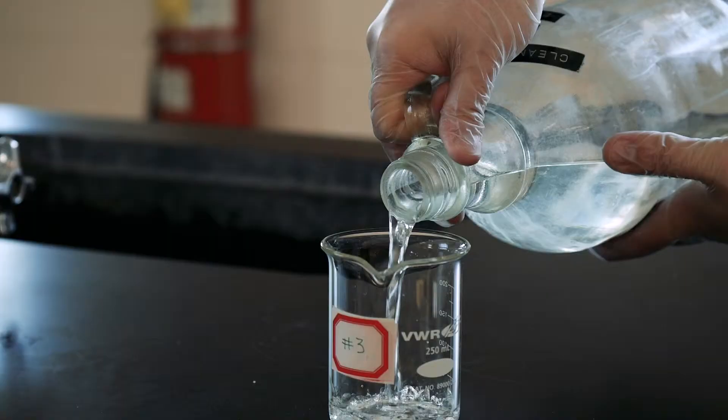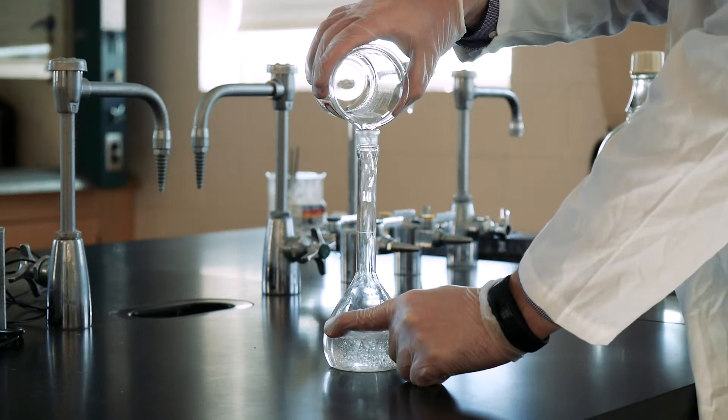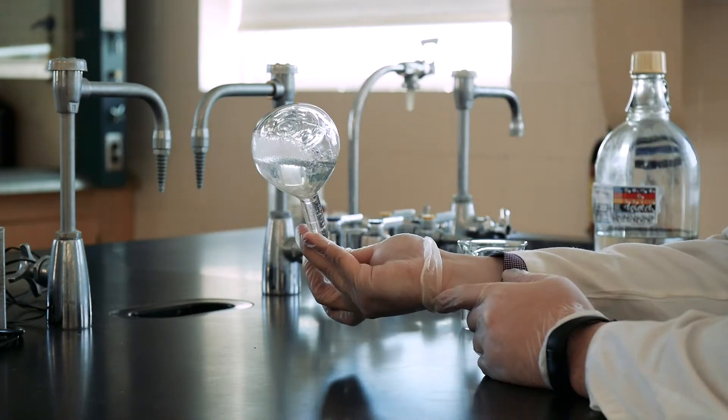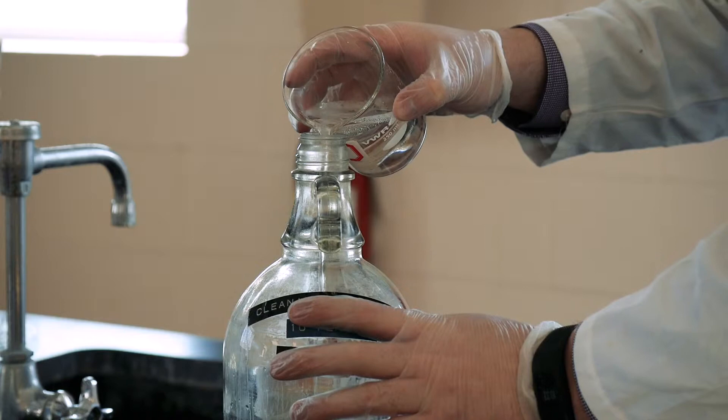Fill the volumetric flask to about half volume with X-Dram cleaning solution. Swirl gently, then invert the flask, and then pour the X-Dram back into the X-Dram bottle.